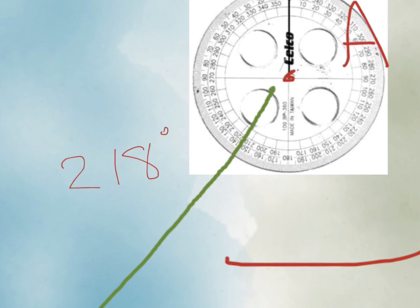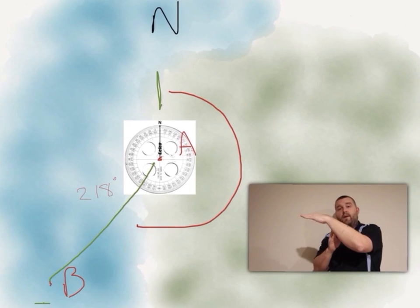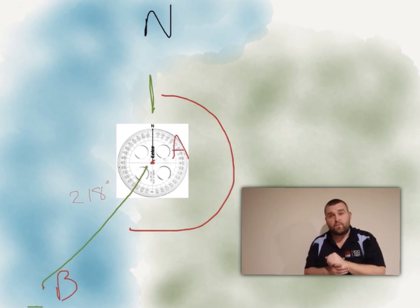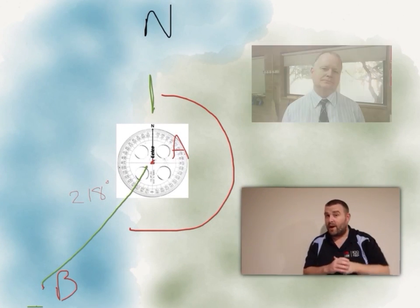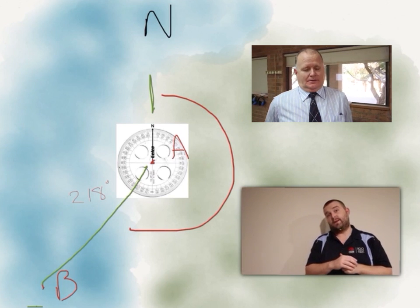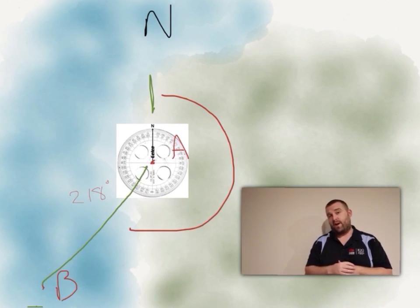Obviously you go from one, two, three, four, five, let's just say 12 points if my maths is correct to 360. So it's a much more accurate way of doing things and that is bearings.